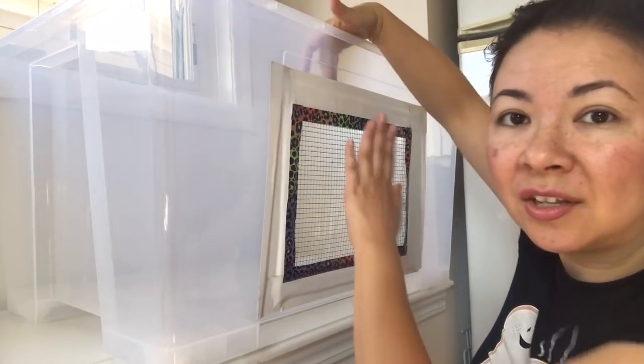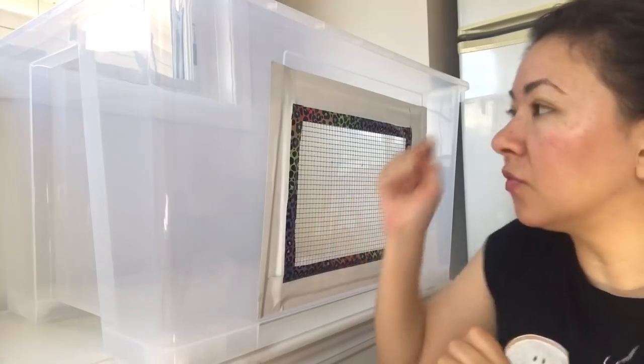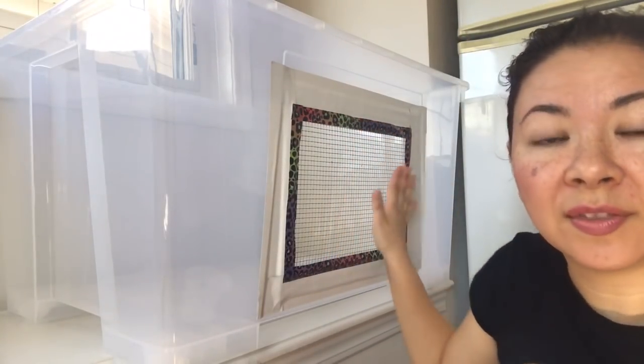you want to continue attaching the mesh to the bin with your individual different pieces of wire all the way around the perimeter of the panel.